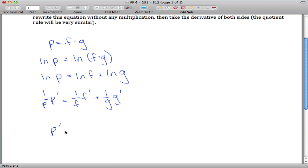Okay, so we have P prime is equal to, if we multiply both sides by P, I'll distribute that P through on the left. So we get P times F prime over F, plus P times G prime over G.